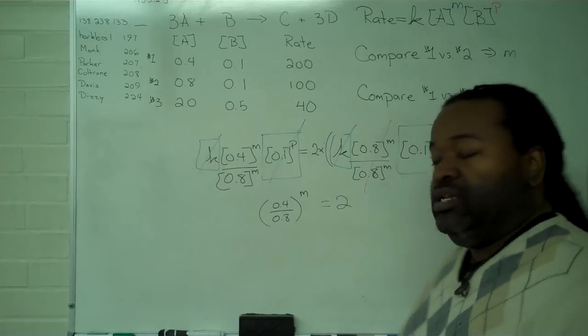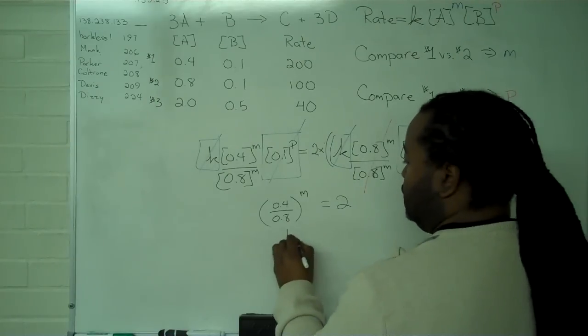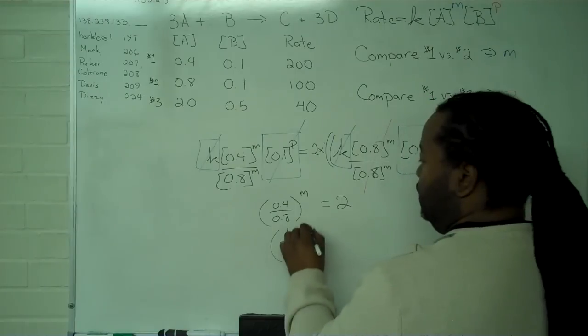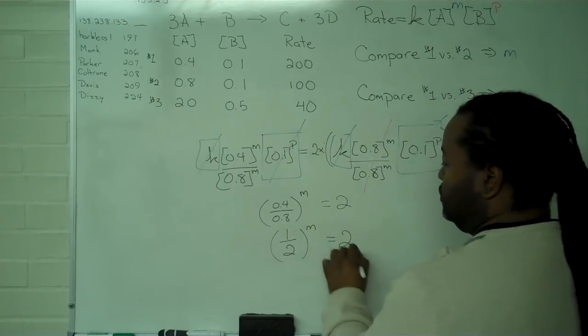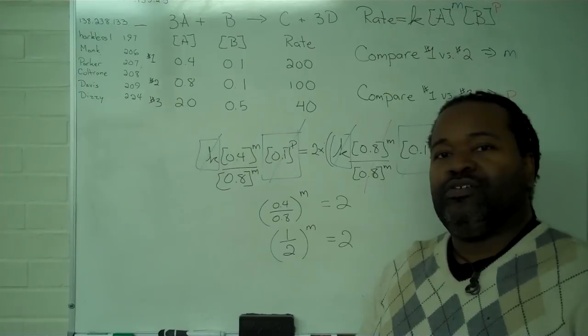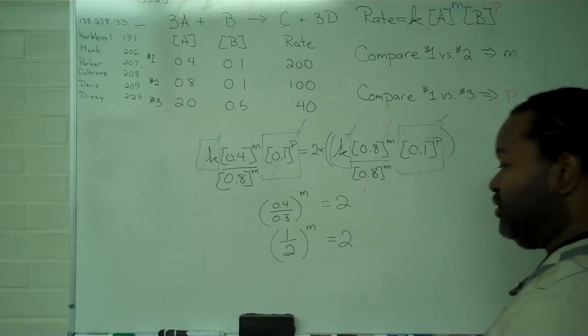0.4 divided by 0.8 is just 1 half. So, I have 1 half to the M equals two. And the only way this works is if M has the value negative one.